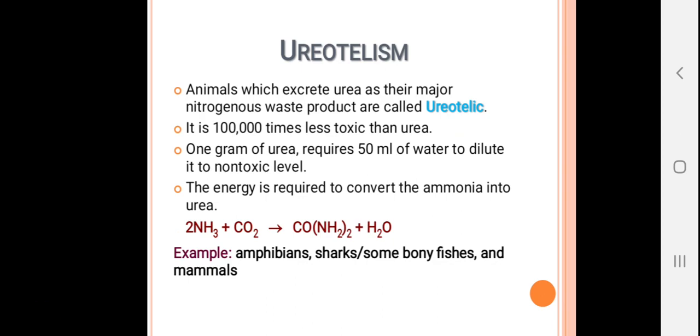So here it requires less water compared to ammonia, and urea is 100,000 times less toxic than ammonia. But the conversion of ammonia into urea requires ATP, which takes place in the liver.